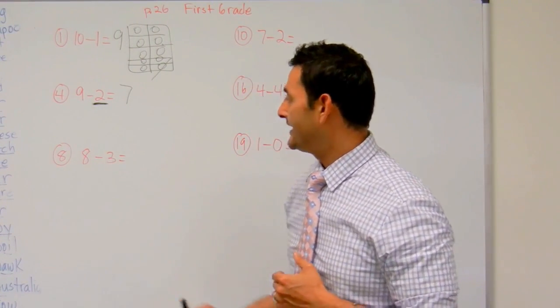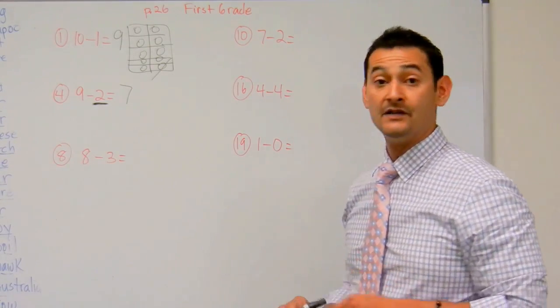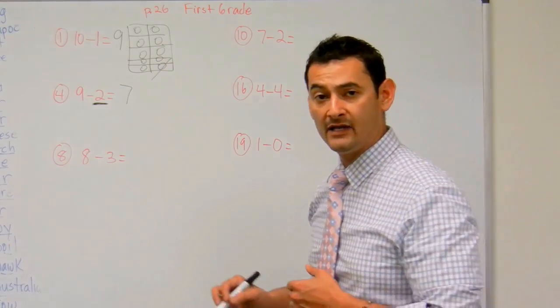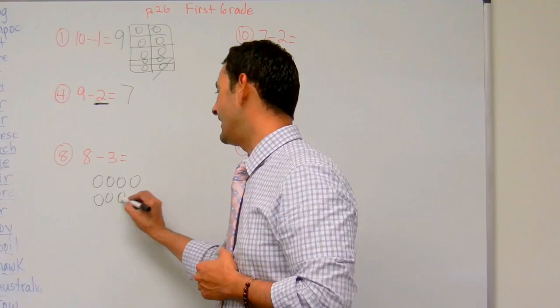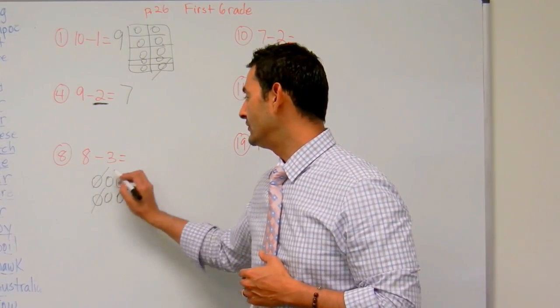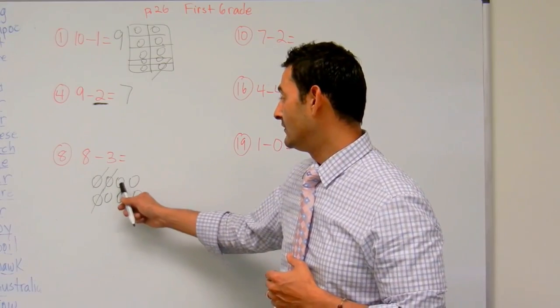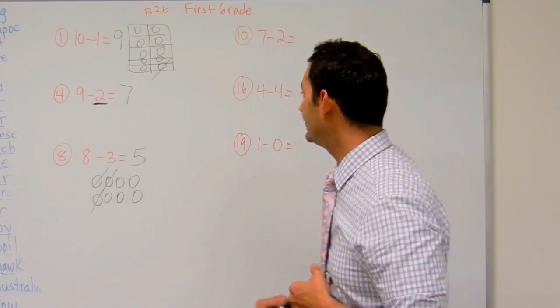Now let's take a look at number 8. Here we have 8 minus 3 equals. What I'm going to do now is just go ahead and draw a picture. So I got 8. 1, 2, 3, 4, 5, 6, 7, 8, and I'm going to take away 3. 1, 2, 3. How many do I have left? 1, 2, 3, 4, 5. 8 minus 3 is 5.